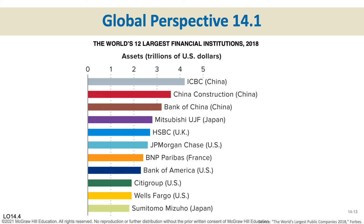Sometimes we think we're in the United States and really the center of all financial dealings in the world, but we're really not. The largest financial institutions are located in China. We really have to come down a bit before we get a large financial institution in the United States. We have some large financial institutions, but we are not the largest — we need to be more aware of where we fit in the global picture.